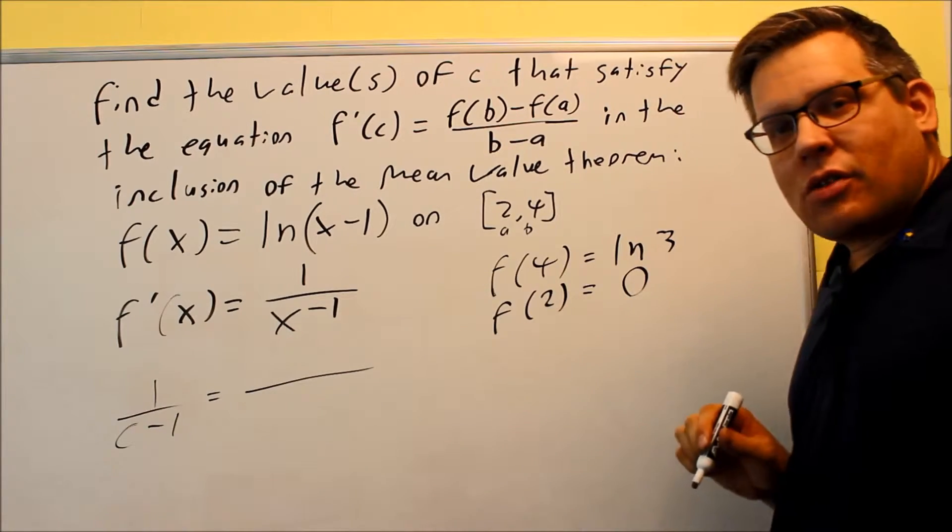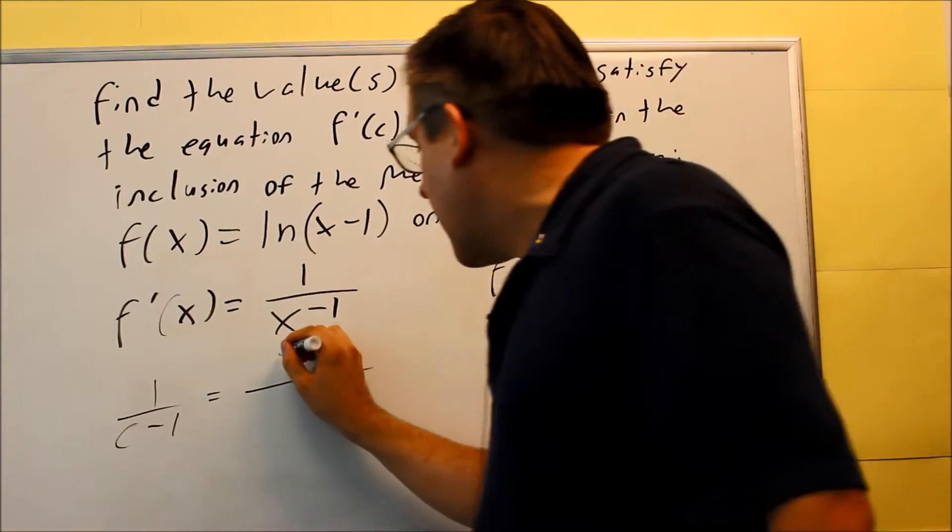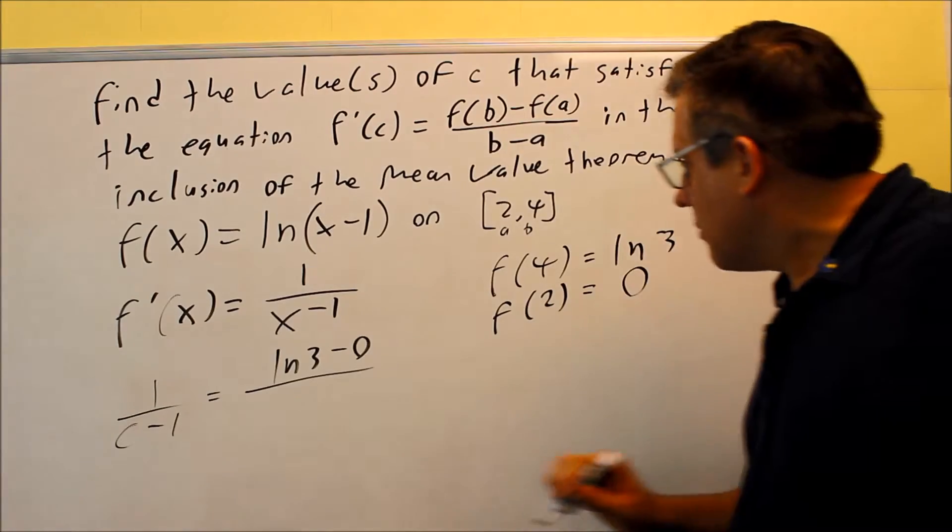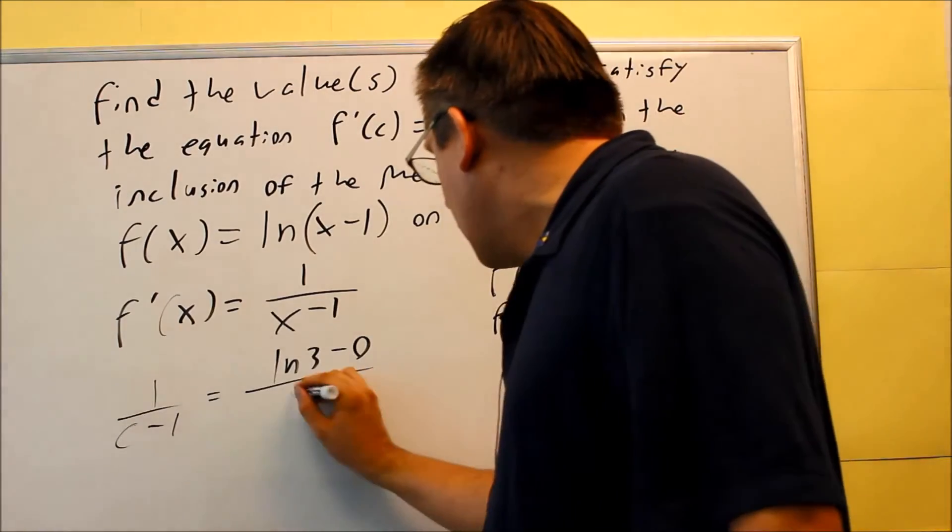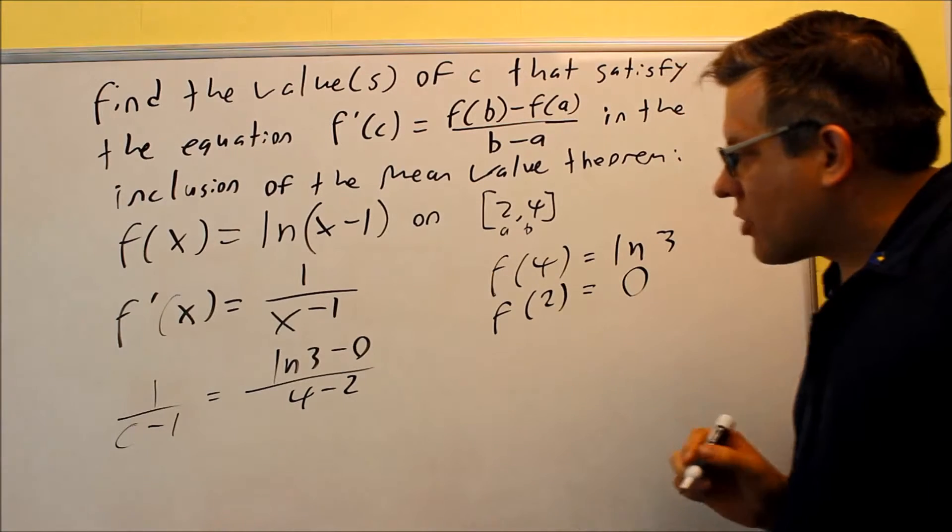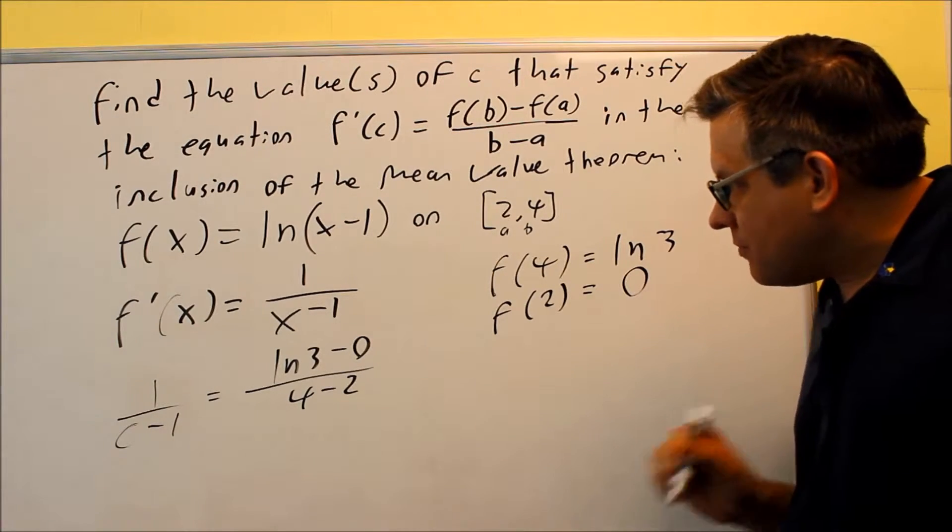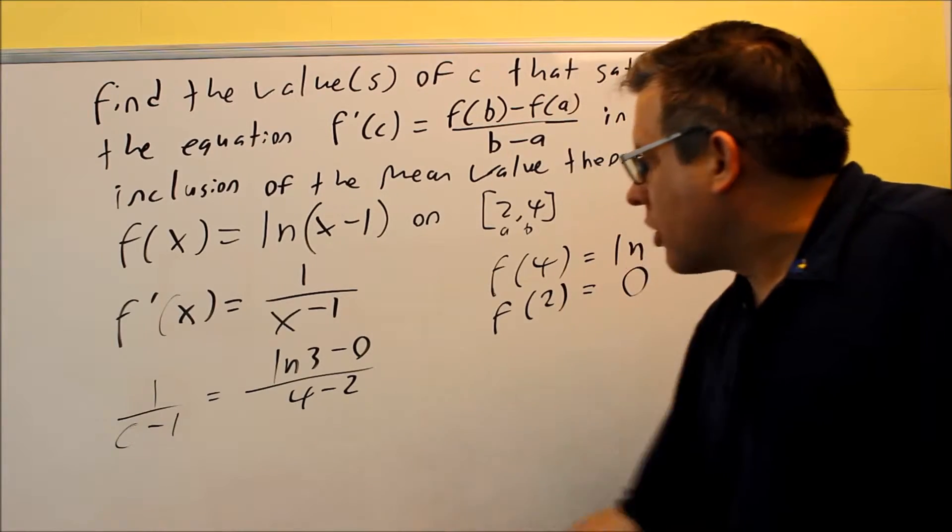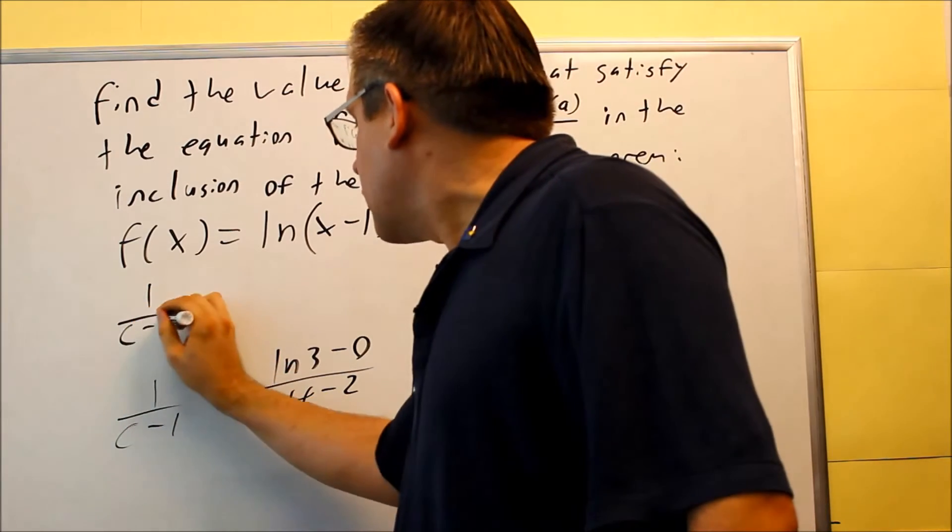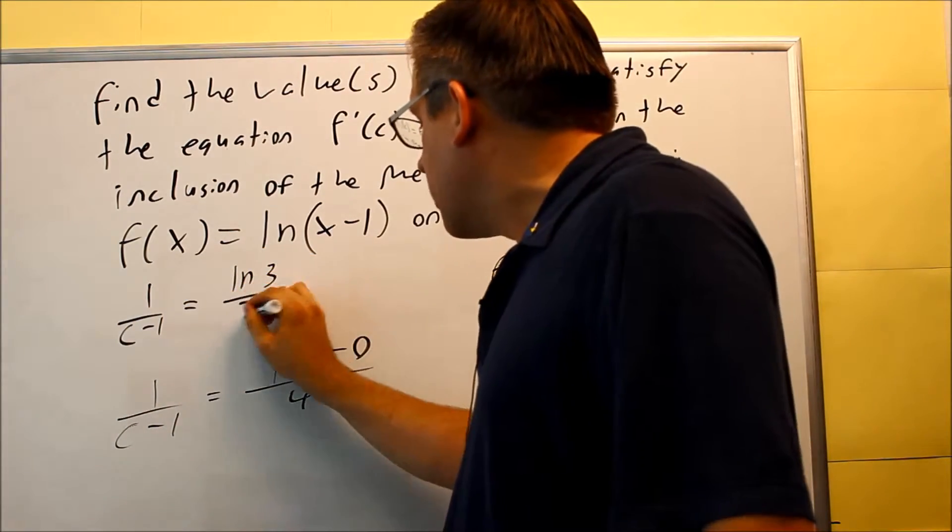We can put these directly into our formula [f(b) - f(a)]/(b-a). We're going to do ln(3) minus 0 on top, and 4 minus 2 on the bottom. Now that we have this complete, we're ready to simplify. So we have 1/(c-1) = ln(3)/2.